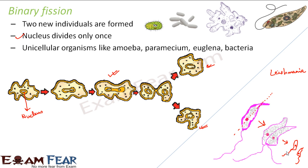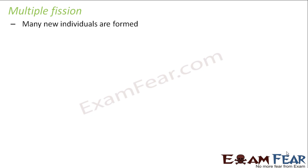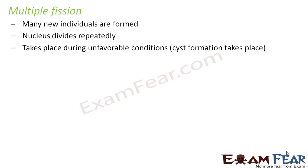Now let us look at multiple fission. In multiple fission, many new individuals are formed. The nucleus divides repeatedly — not just once — resulting in many nuclei. An important difference from binary fission is that multiple fission takes place under unfavorable conditions, whereas binary fission happens under favorable conditions.